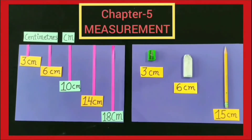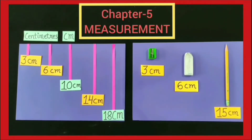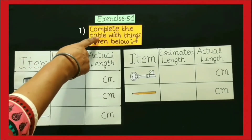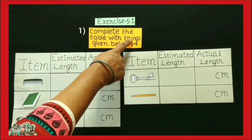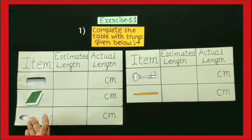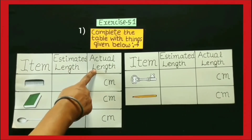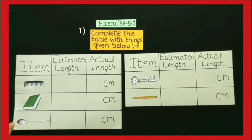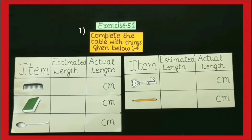Students, you have already learned how to measure the length of small things with the help of a scale, and today we will discuss sums of exercise 5.1. The first sum is: complete the table with things given below. In this, some things are given and we have to find out the estimated length and actual length of the given things. Estimated length is found out by observing the thing, and actual length is found out by measuring the thing with the help of a scale. Let's start.